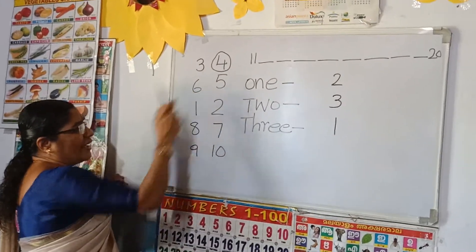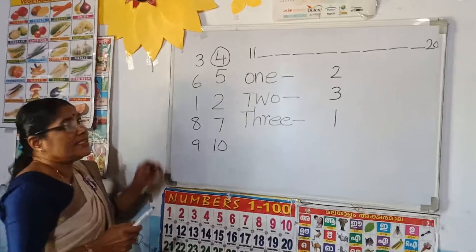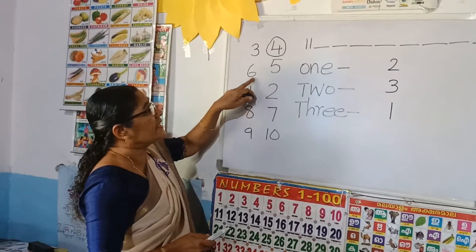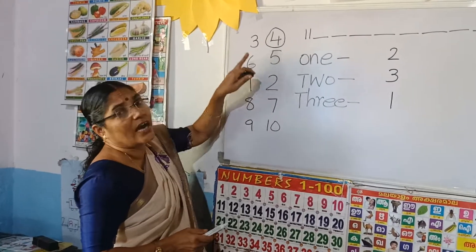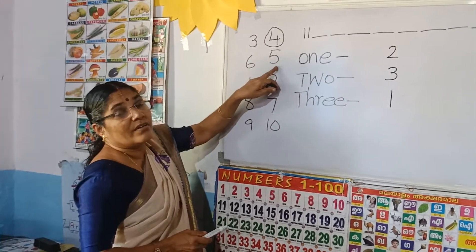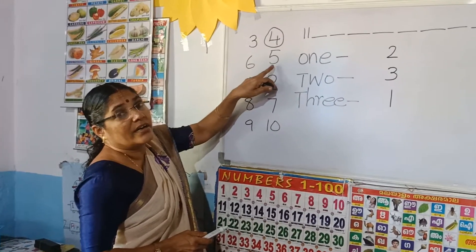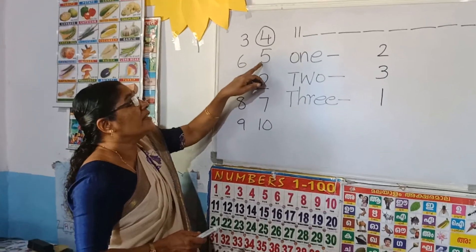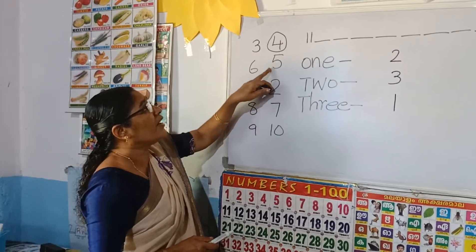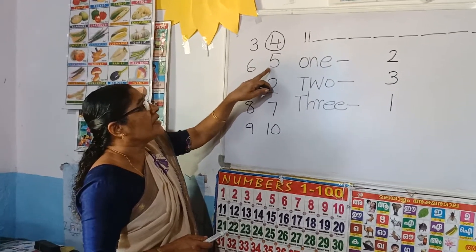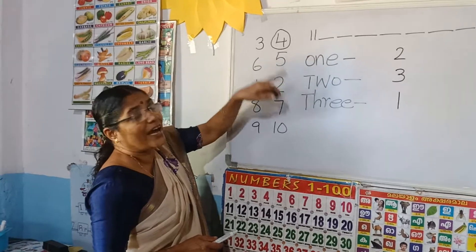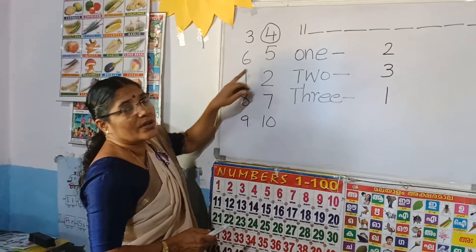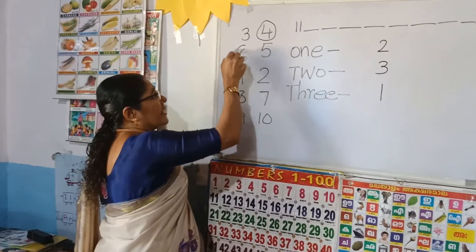6 and 5 — which number is biggest? Here, look: after 5 comes 6, not before. So 6 is the biggest number here.